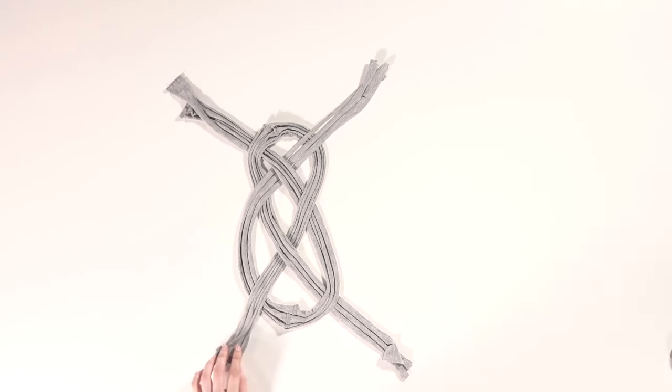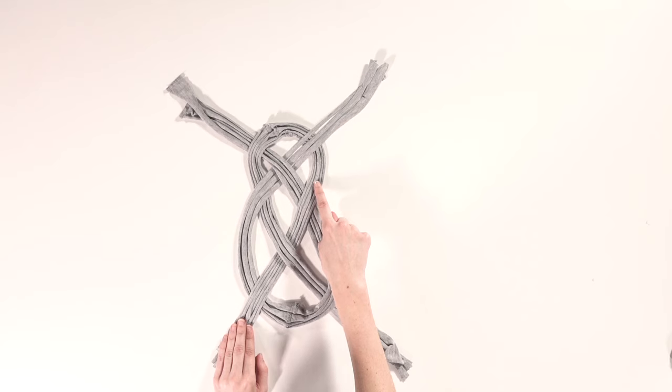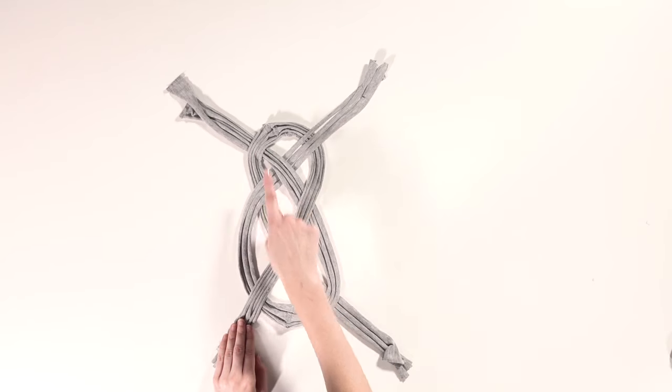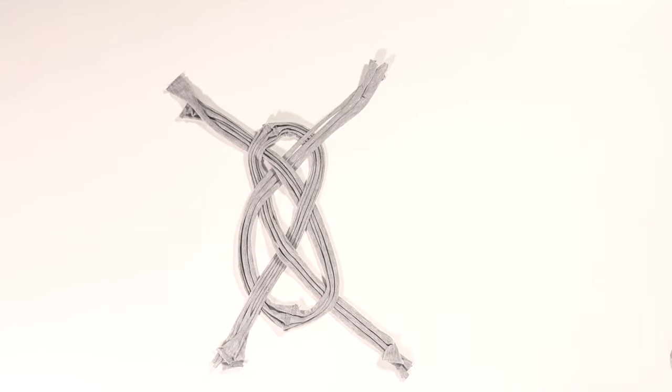Now double check that you've made this knot correctly by starting at the bottom left-hand side of the loop. It should loop over the first strand, under the second, over again, under again, over, under, over again, and then finally under the final strand like this.